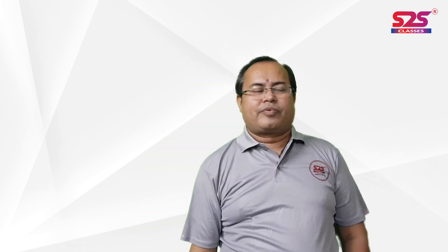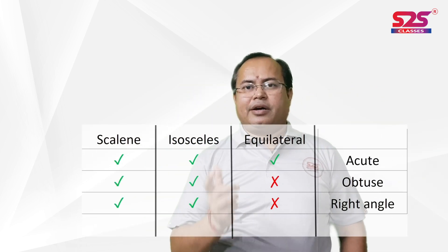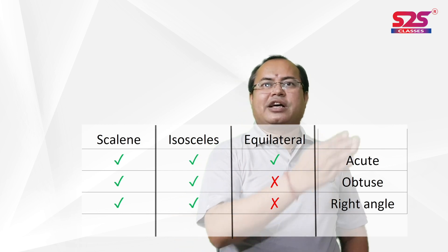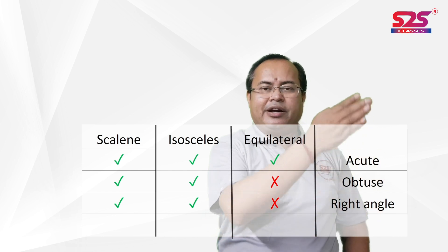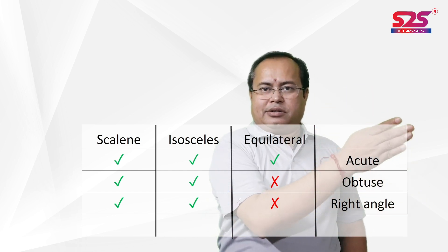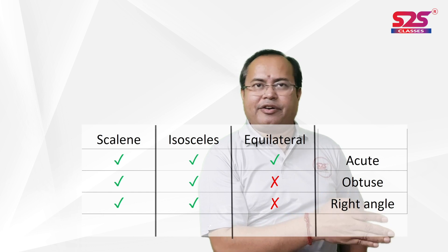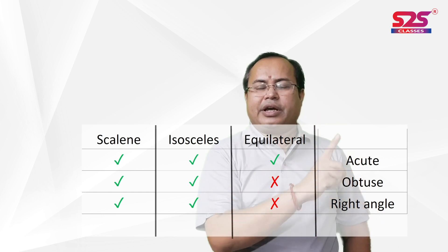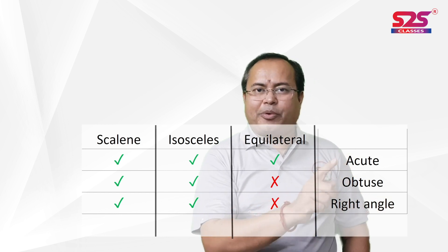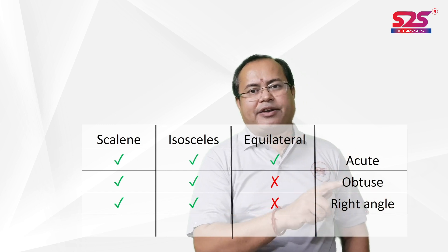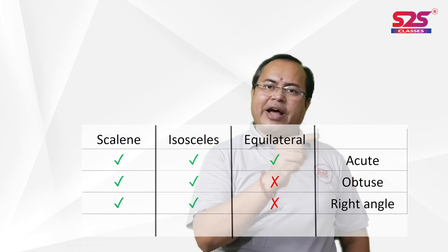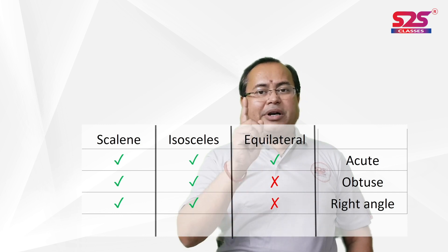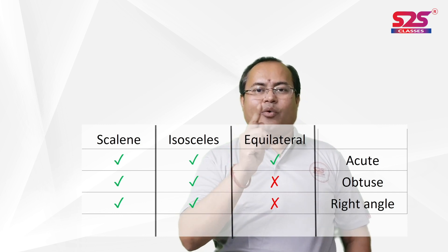Just see the table. Here we have scalene, isosceles, and equilateral triangles on one axis, and acute, obtuse, and right angle on the other. In the case of a scalene triangle, one angle can be acute, one can be obtuse, or one can be right. In the case of an isosceles triangle, one angle may be acute, one angle may be obtuse, or one angle may be right.